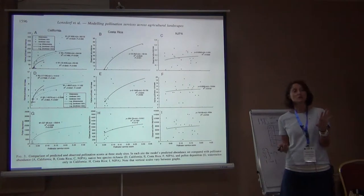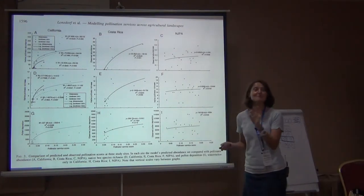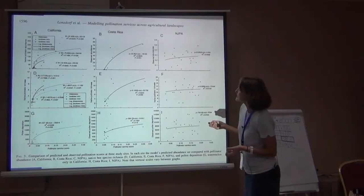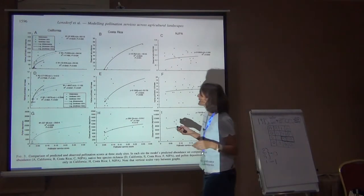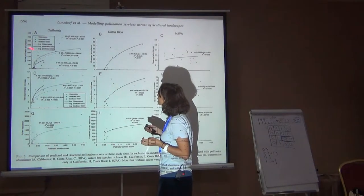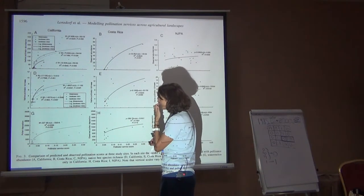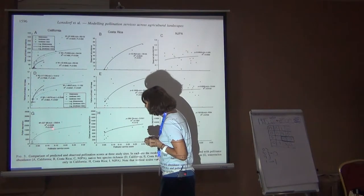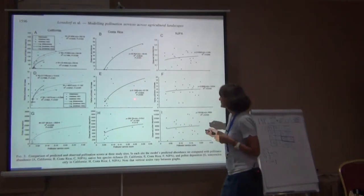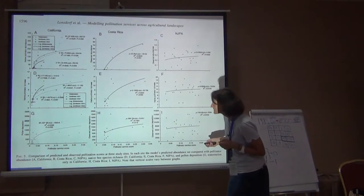And do not ask me how they measure pollen deposition — I'm the geographer in the room, but I'm sure it's in the paper somewhere. In two of the landscapes, they're getting fits between the output of the model and abundance, richness, and even pollen deposition that are pretty good. The R-squares are 0.5, 0.75, 0.6, 0.8, 0.6 — this is a bit lower — 0.2, and it's not statistically significant.